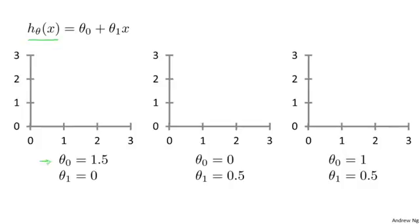If Theta 0 is 1.5 and Theta 1 is 0, then the hypothesis function will look like this, right? Because your hypothesis function will be h of x equals 1.5 plus 0 times x, which is this constant value function, which is just flat at 1.5.